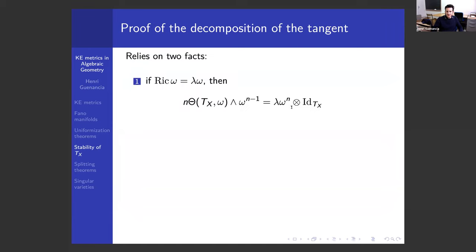Two facts I'm going to use. The first is that a Kähler-Einstein metric induces on the tangent bundle a Hermitian-Einstein metric, which is a metric such that its curvature theta of TX wedged with omega — taking the trace with respect to omega — gives the identity of TX. This says that the curvature tensor of TX, a (1,1)-form with values in the endomorphism bundle, when contracted with omega, gives a multiple of the identity. The multiple lambda is given explicitly by the cohomology class of omega.